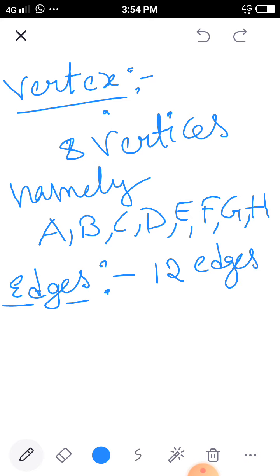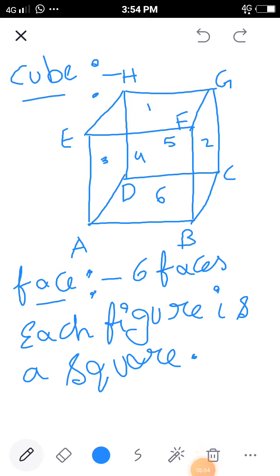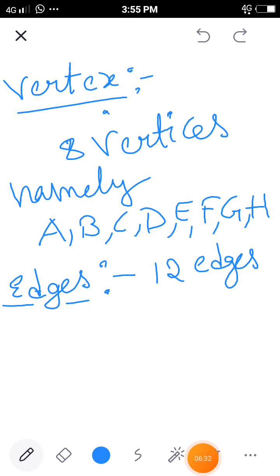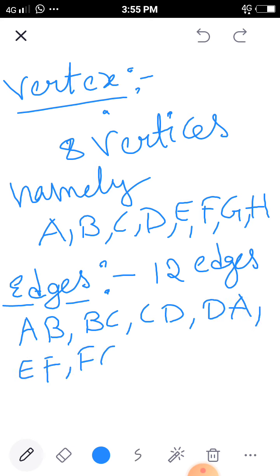Now what are the edges? Here, AB is one line segment, right? BC second one, CD, DA, EF, FG, GH, HE, and then AE, BF, CG and DH.